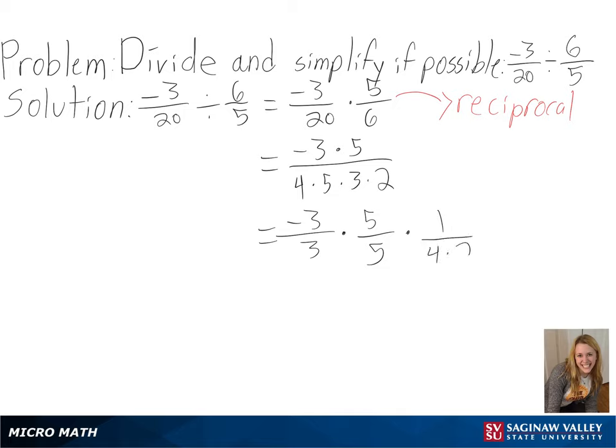Then we have 1 over 4 times 2, which is equal to 1 over 8. And moving the negative sign, we get negative 1 over 8. And this is our final answer.